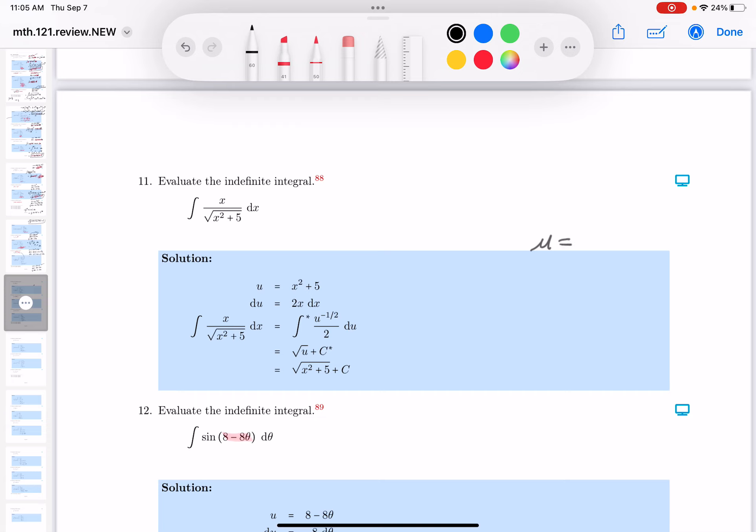U equals - what do you get there? 8 minus 8 theta. What does dU equal? It's minus 8 d theta. All right? So I'm going to say minus 1 eighth of a dU is identical to d theta.